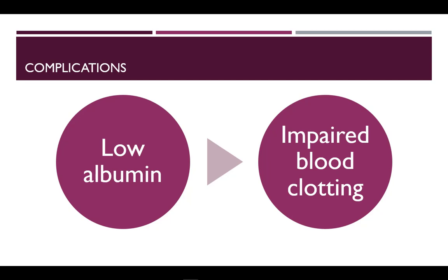As the liver cells lose function, production of vital proteins like albumin and blood clotting proteins is impaired.